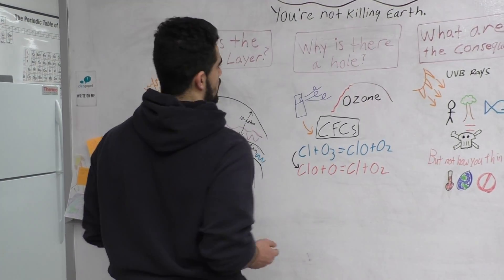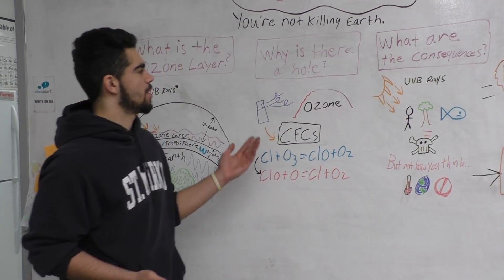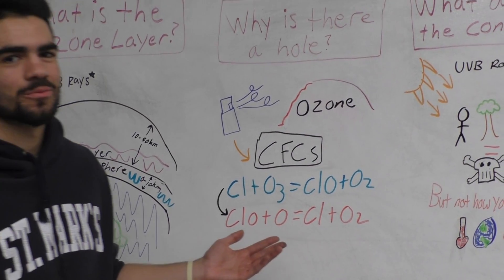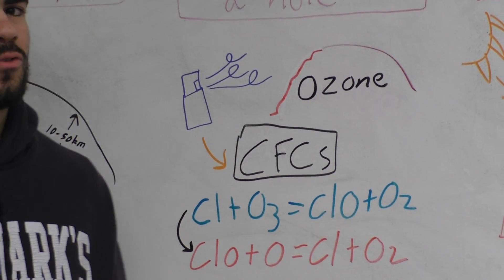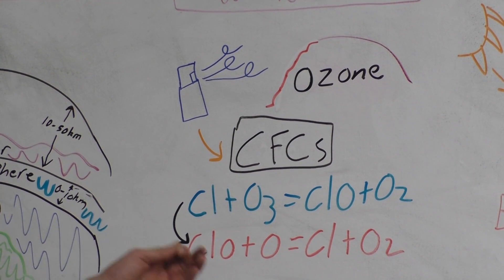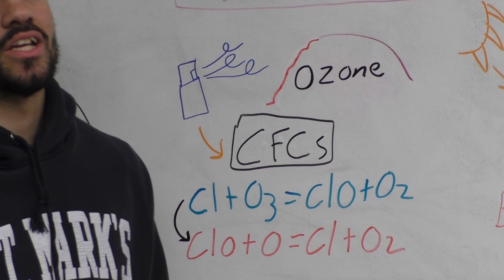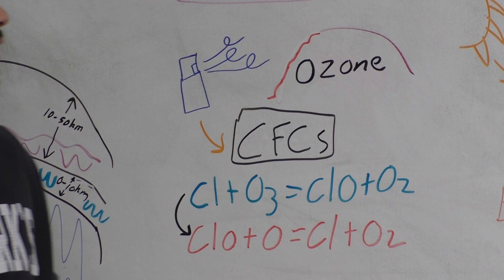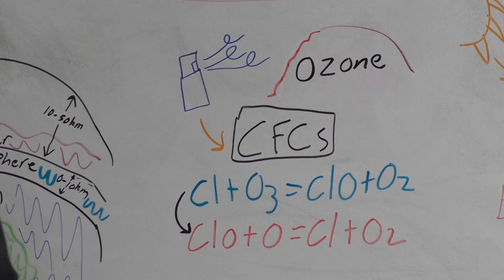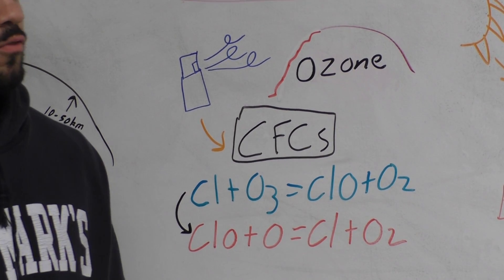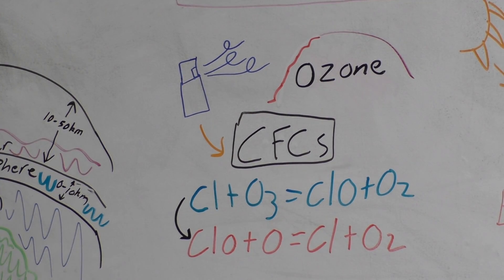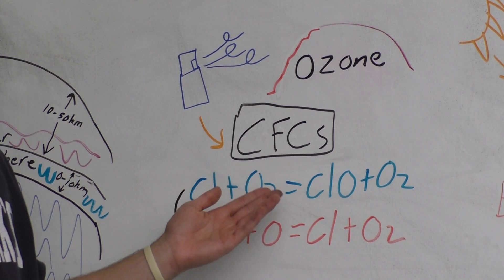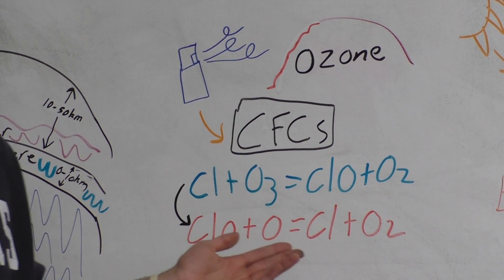Now that we know this, we can move on to why there might be a hole inside of the ozone layer. In the 1920s, inventors looked for a solution for refrigerants that were non-toxic and non-flammable, as before the 1920s they had these problems of refrigerants being toxic and flammable. So what they did was invented these molecules known as chlorofluorocarbons.